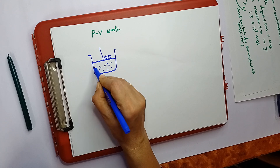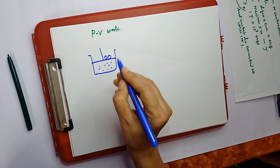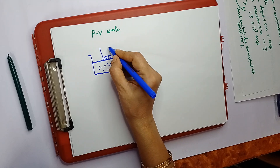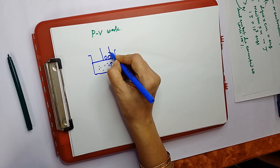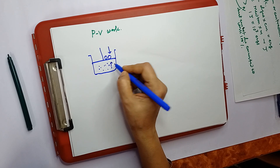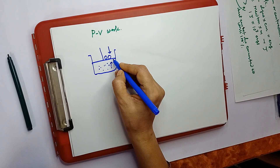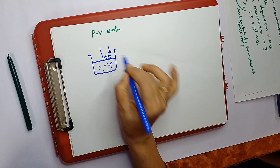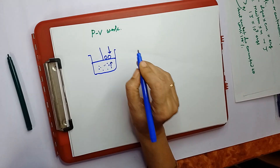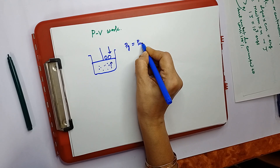When the piston is in a stationary or static state, the pressure of the gas acting in the upward direction is equal to the external pressure acting in the downward direction. The external pressure means atmospheric pressure plus the weight of the piston plus the weight I have kept on it. At the static condition, we can write P_gas = P_external.